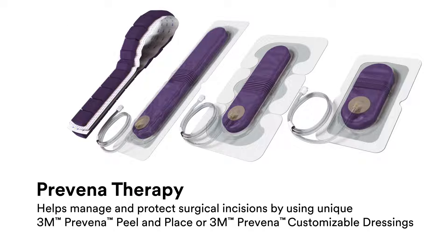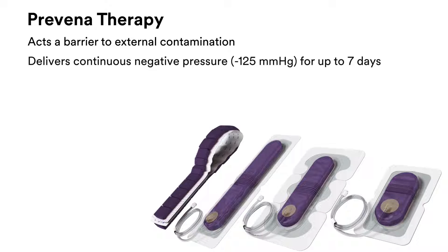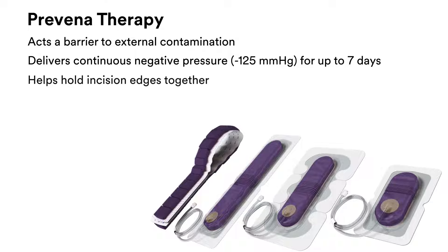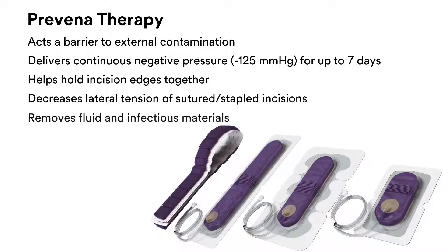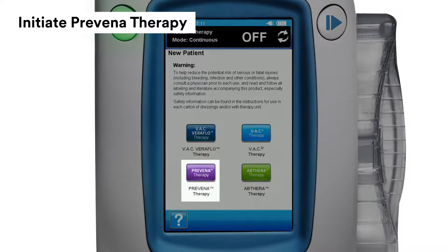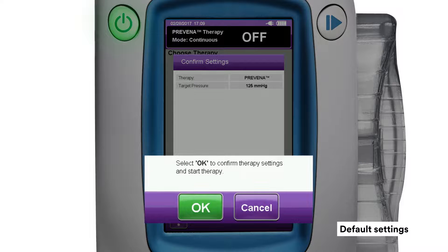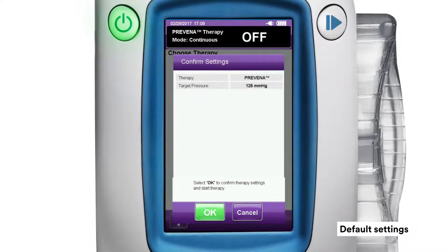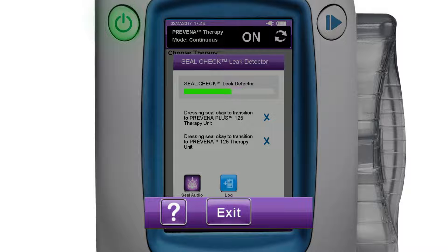3M Preavena therapy helps manage and protect surgical incisions by using unique 3M Preavena peel-and-place or 3M Preavena customizable dressings, acting as a barrier to external contamination, delivering continuous negative pressure for up to 7 days, helping hold incision edges together, decreasing lateral tension of sutured or stapled incisions, and removing fluids and infectious materials while reducing edema. To initiate Preavena therapy, press the purple Preavena therapy button, then press the green OK button on the confirmation screen to accept default settings and begin Preavena therapy.